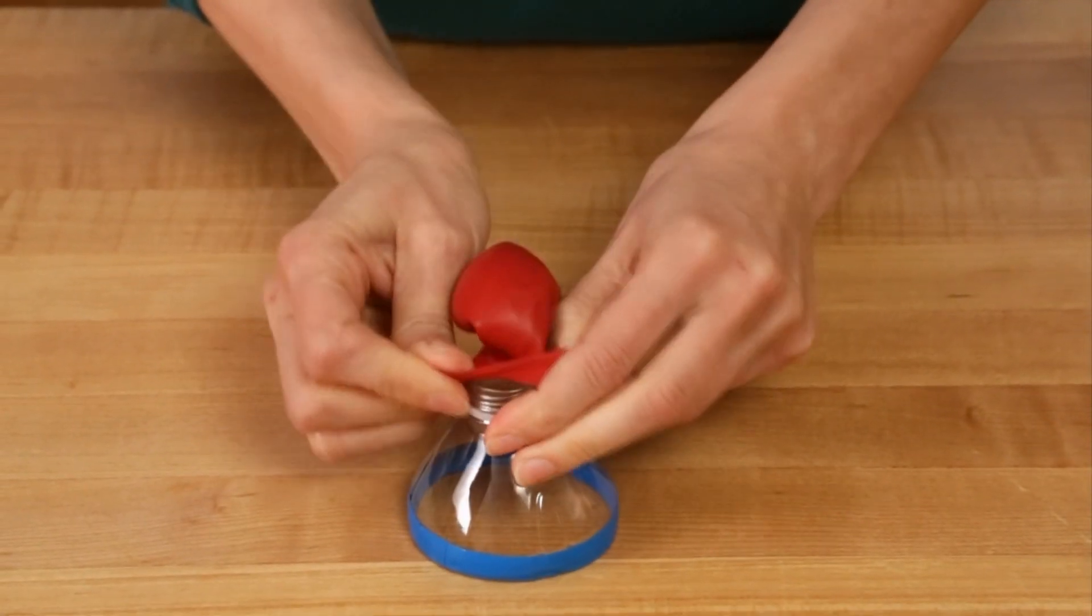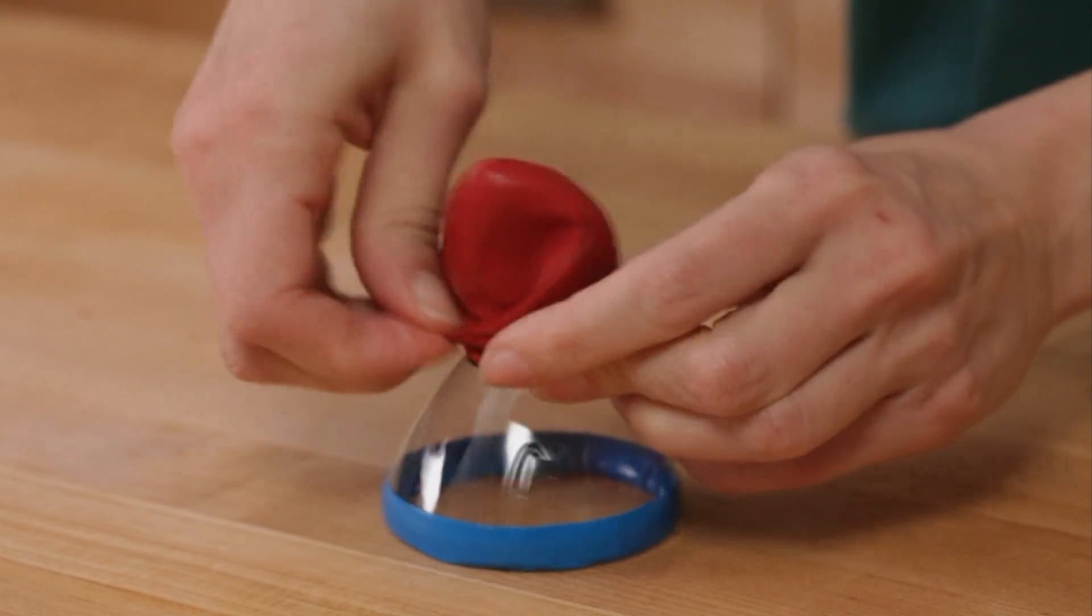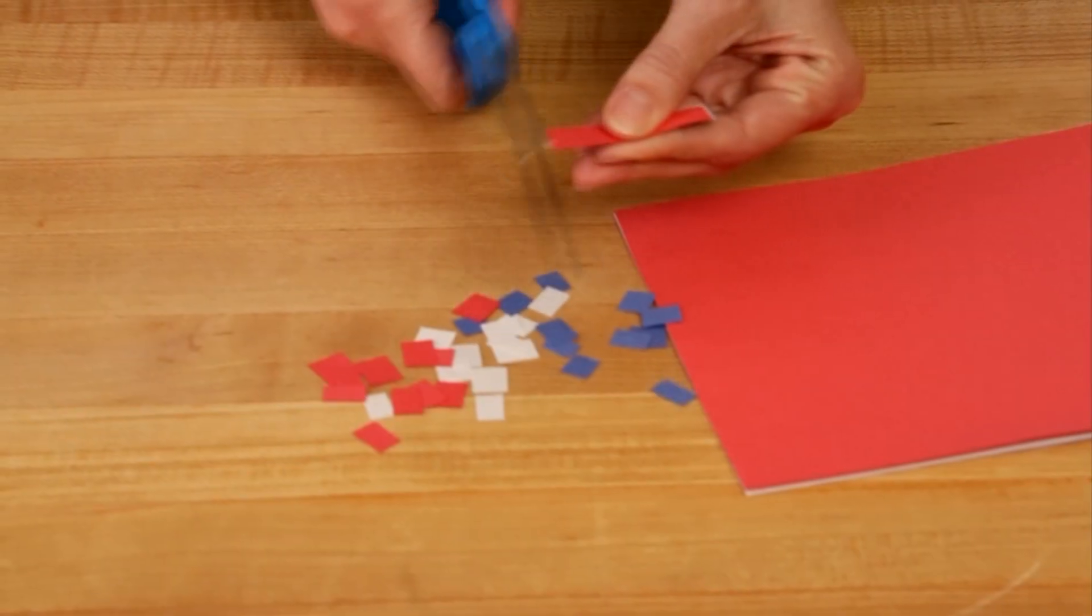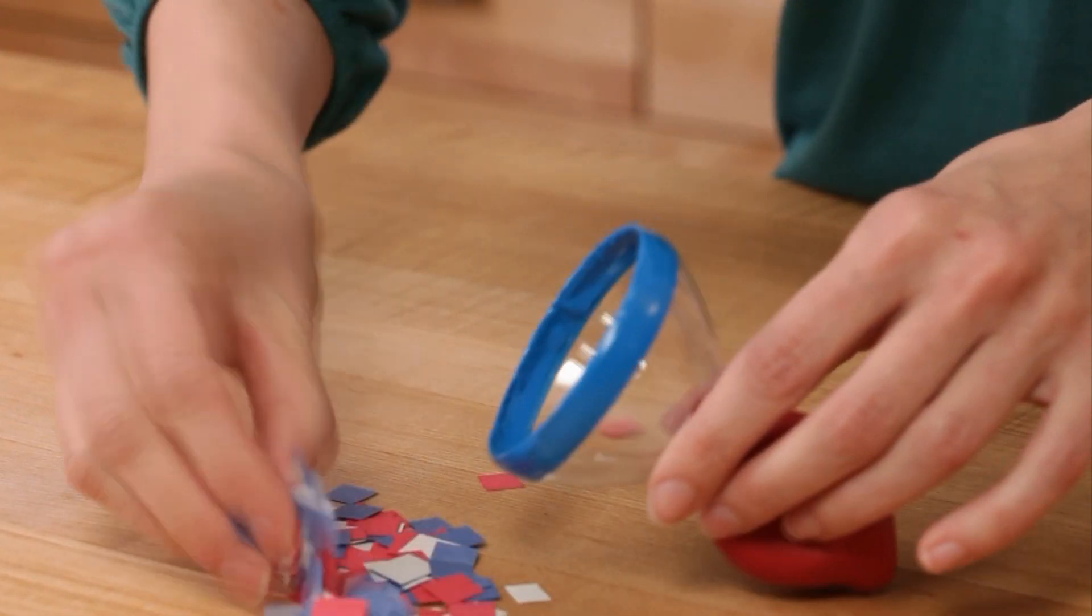Stretch the balloon over the mouth of the bottle, then work it down to shorten the balloon. Cut your paper into tiny pieces, then fill the popper.